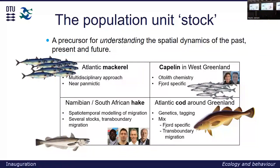I've done similar work in Namibia and South Africa looking at transboundary migration — stock understanding of natural population units is essential. I should also mention our capelin project where we had a PhD student, Peter, and we used otolith chemistry to look at capelin in West Greenland, where we found the stock structure to be very fjord-specific — populations really staying within fjords. Completely different from the Atlantic mackerel, which is interesting because capelin have the capacity of migrating thousands of kilometres, as we see in East Greenland and Iceland, where they have a very long ontogenetic migration path.